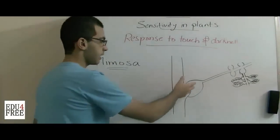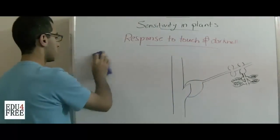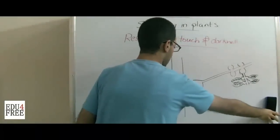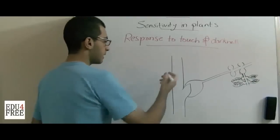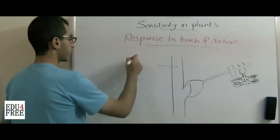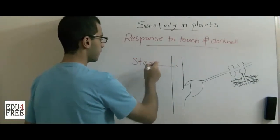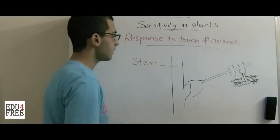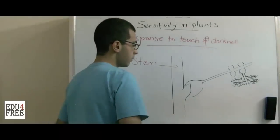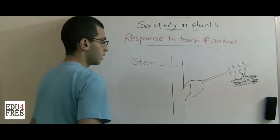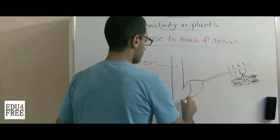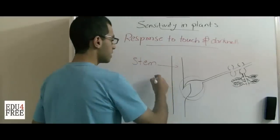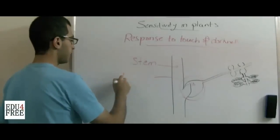This is a diagram which represents the Mimosa plant's structure. Simply, this is the stem of the plant. When we talk about the branches, here we have the swollen structure. This part, this is called a pulvinus.